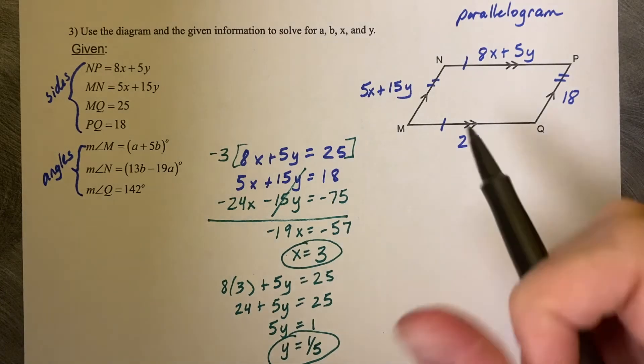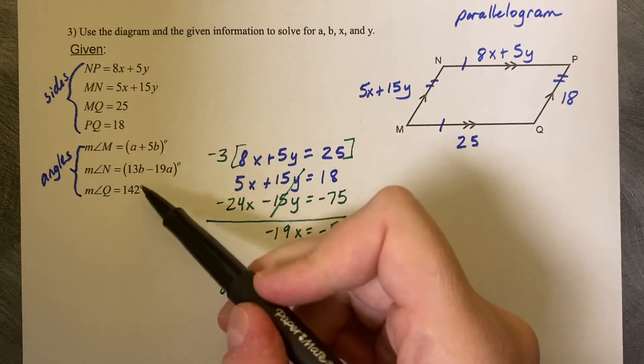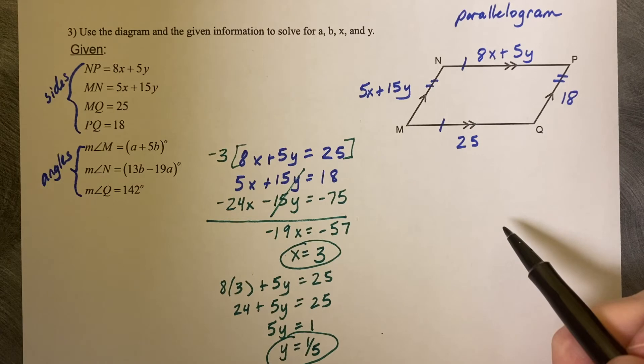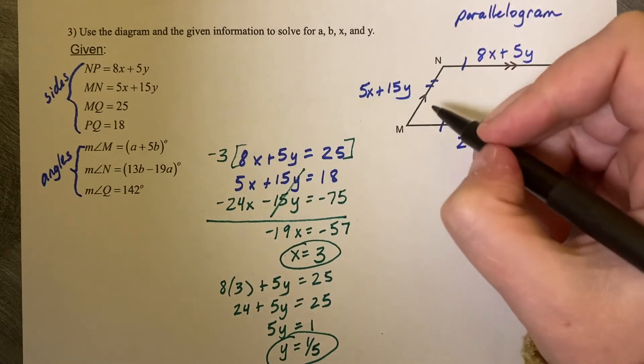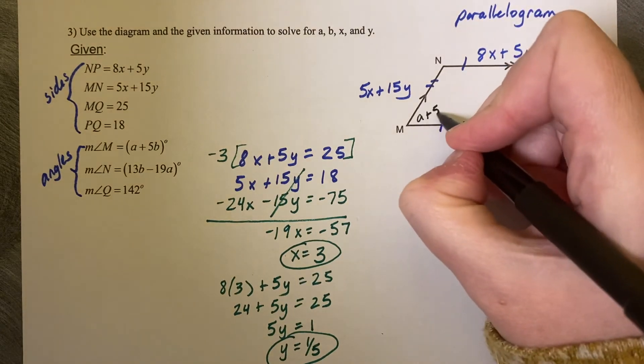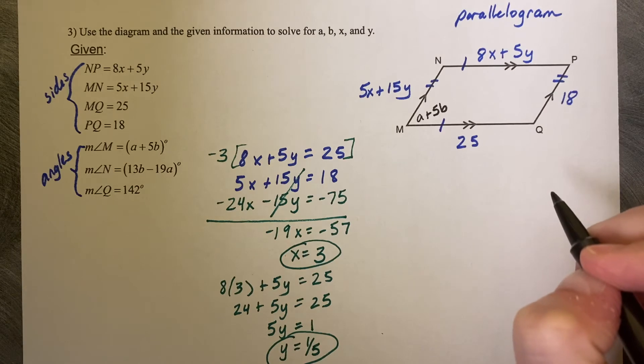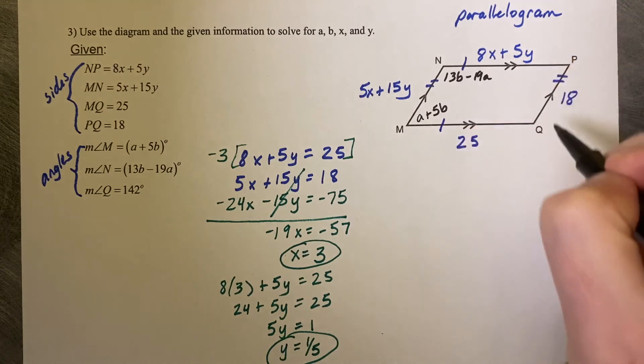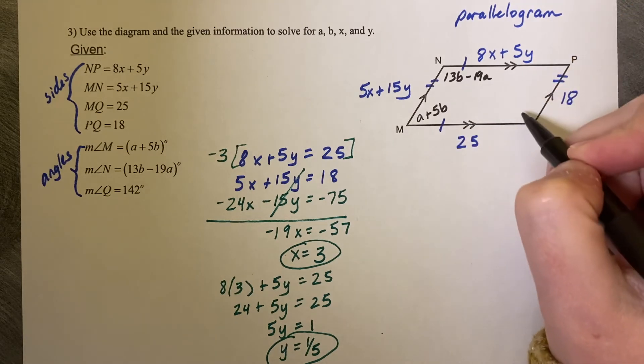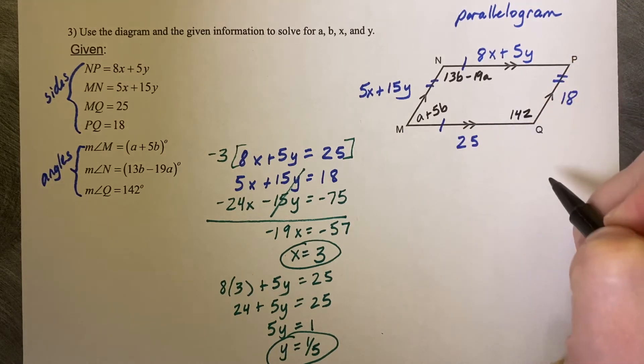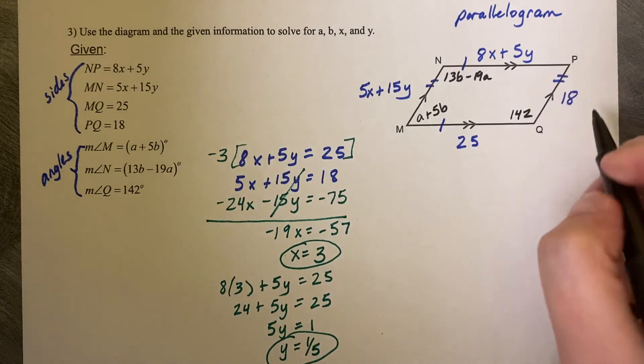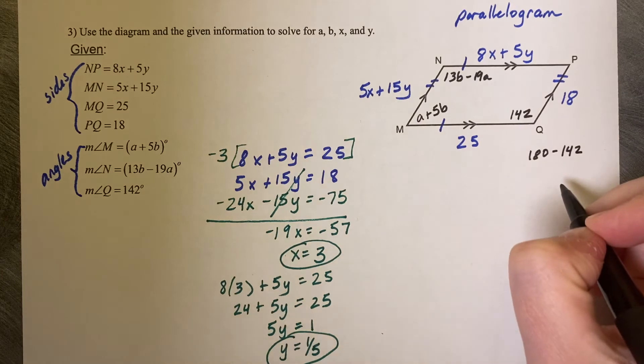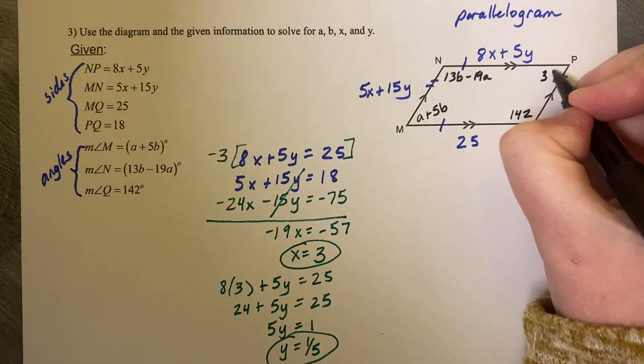Now pause this video and try to set up your system for your angles. Angle M is A plus 5B. Angle N is 13B minus 19A. Measure of angle Q is 142. And then we can also calculate what the measure of angle P is by 180 minus 142 which is going to get the measure of 38 degrees.